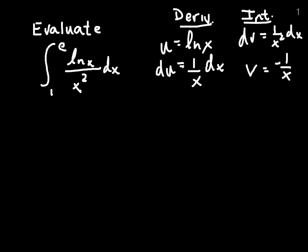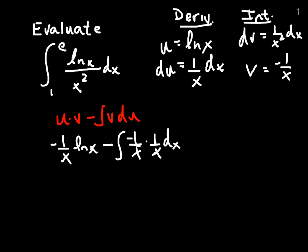The integration by parts formula is that we get u times v minus the integral of v du. So we're going to get negative 1 over x times the natural log of x minus the integral of negative 1 over x times 1 over x dx. The limits of integration are 1 and e. And this part that doesn't have an integral, it has to be evaluated from 1 to e.